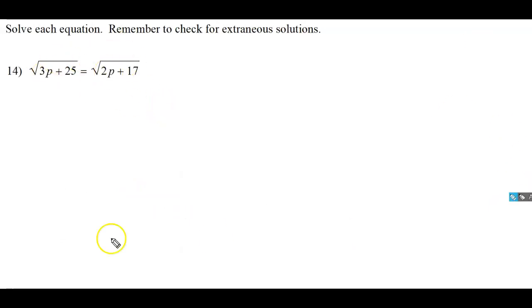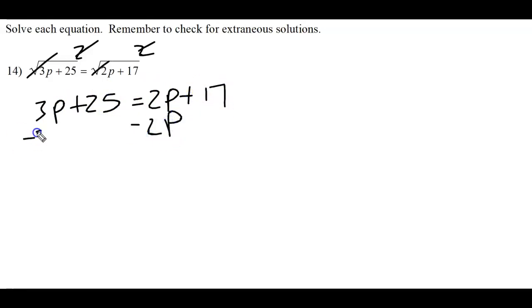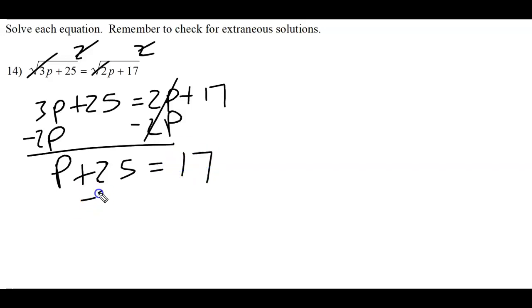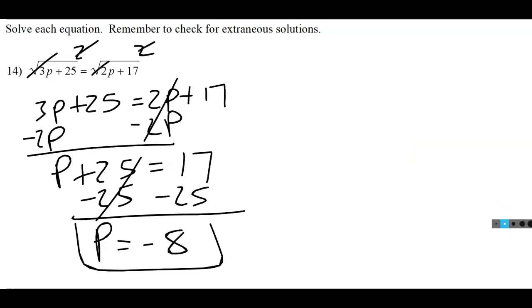Type 2: when there's a square root on both sides, just square both sides right away — the square roots disappear. Then solve like any normal equation: combine like terms and isolate the variable.